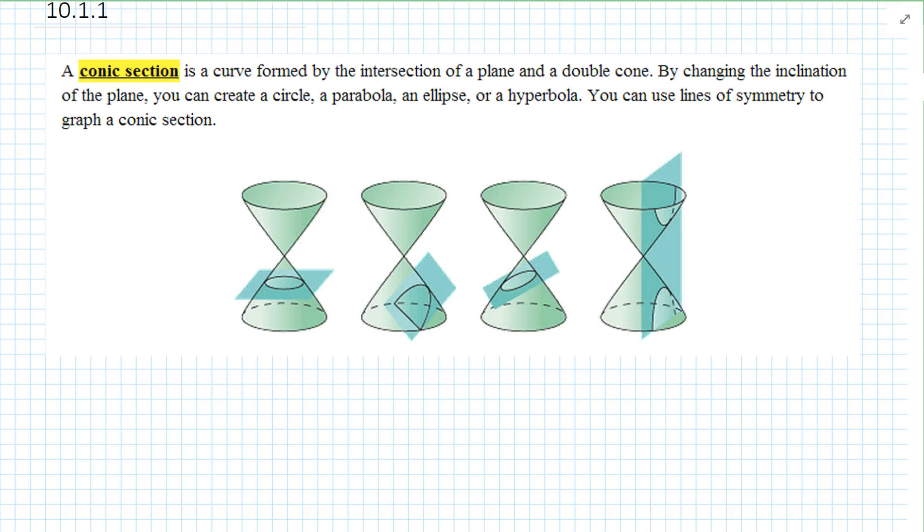Really what is a conic section? It is a curve formed around the intersection of a plane and a double cone.